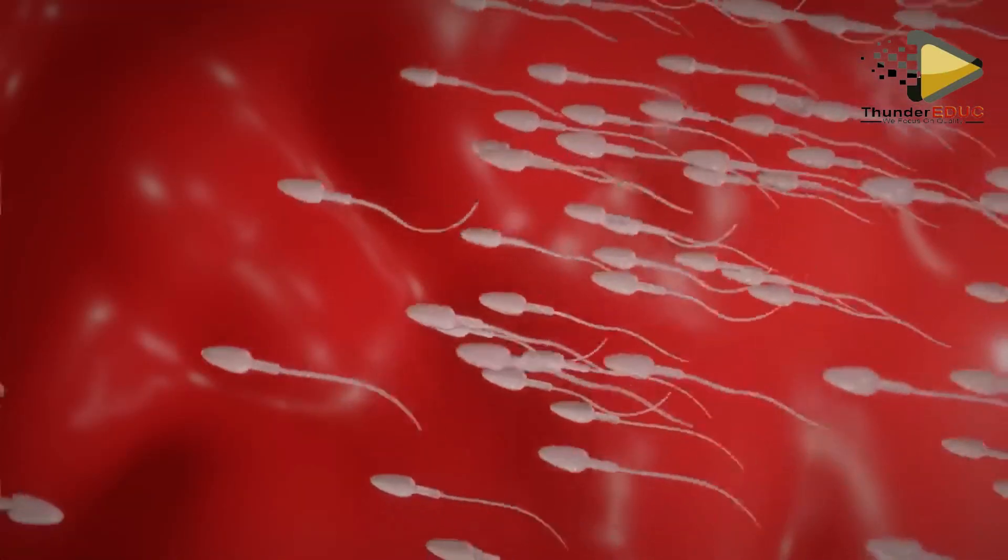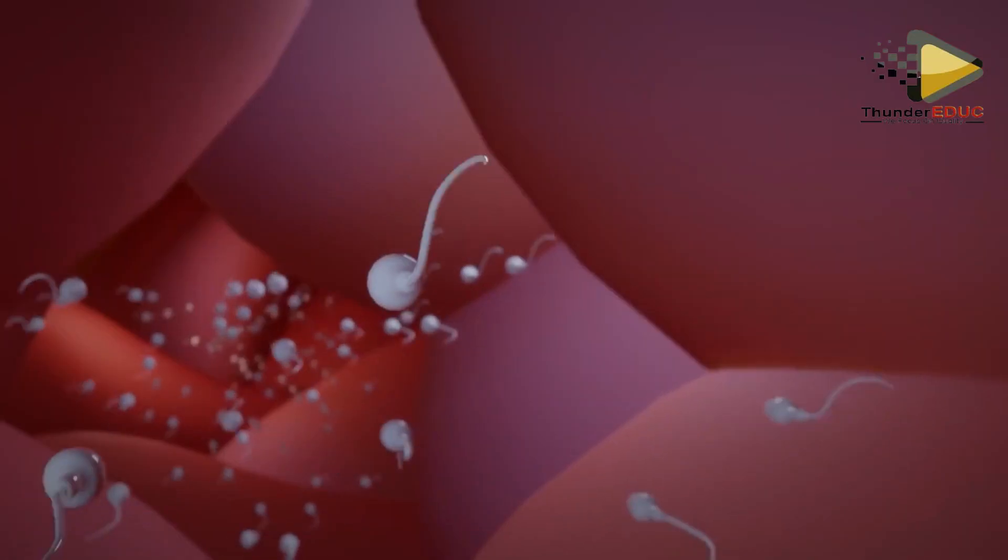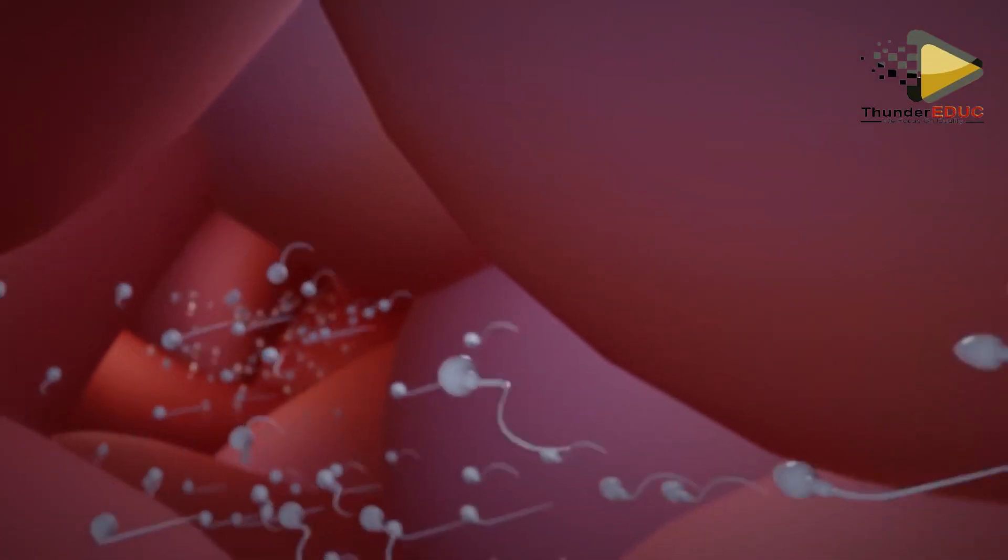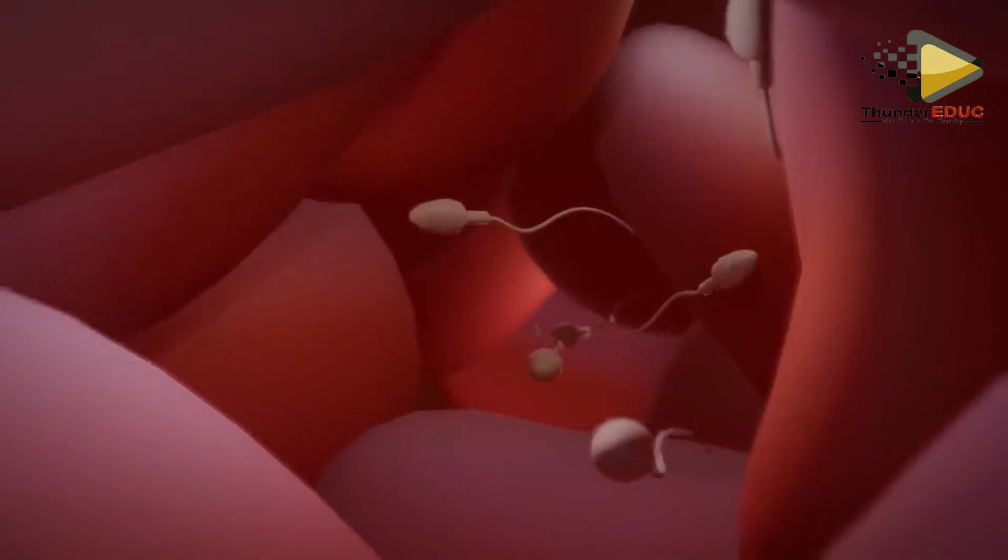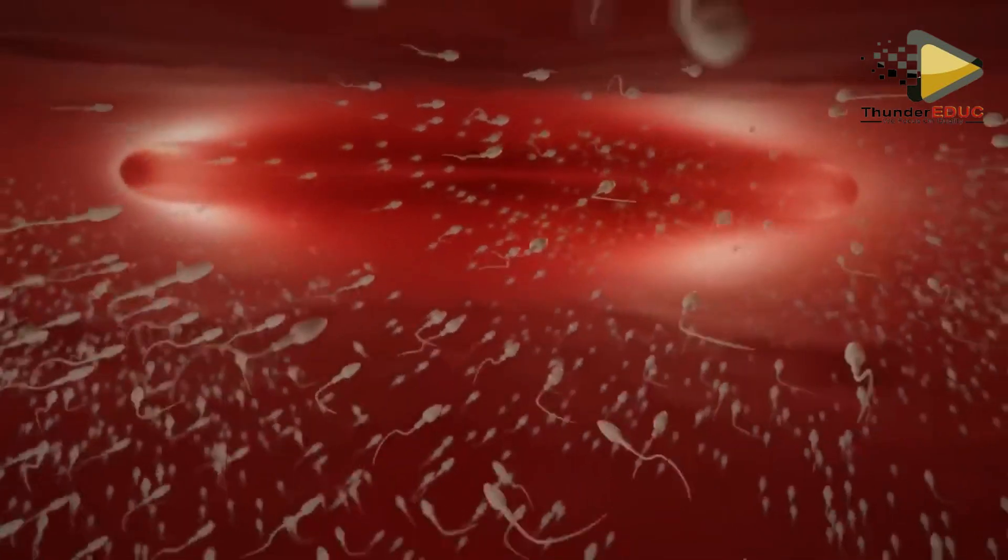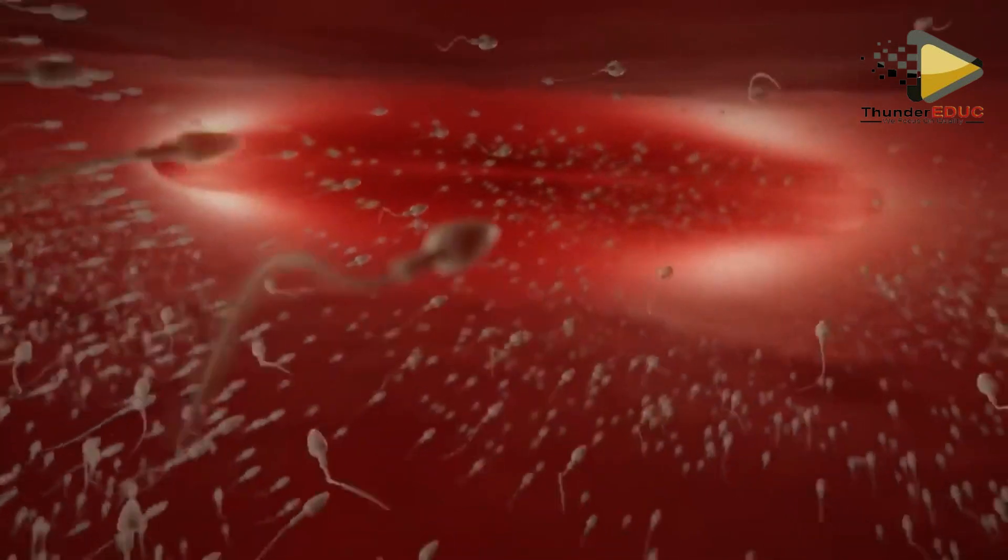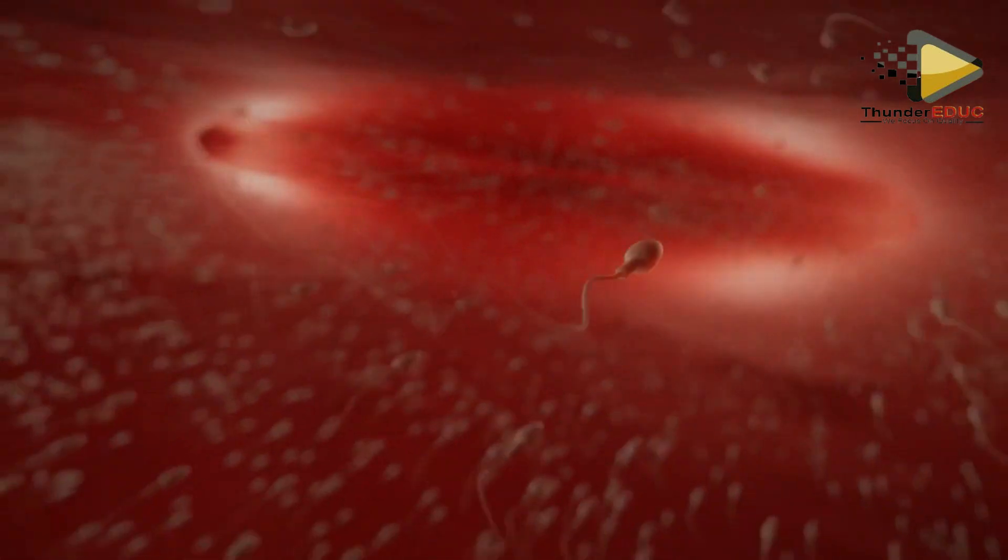That's why over 300 million sperm are produced in a single ejaculation, so that a few million can survive to the fallopian tube.